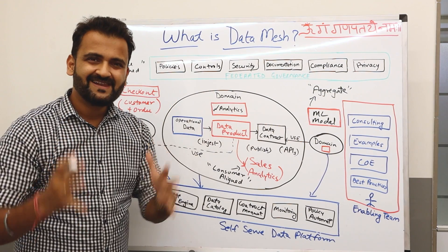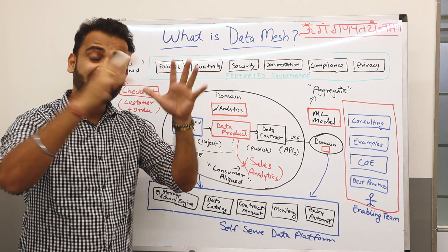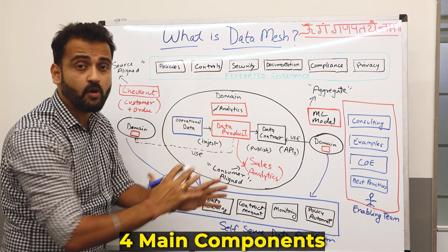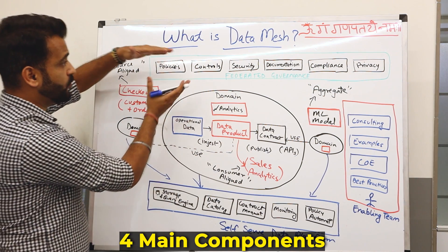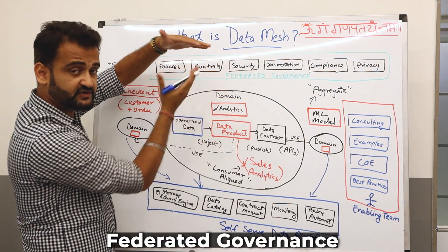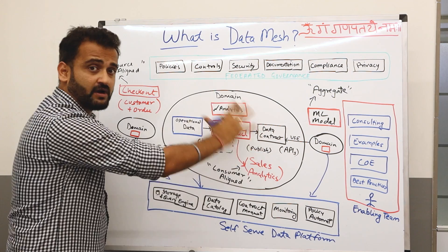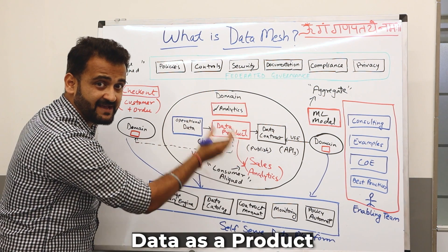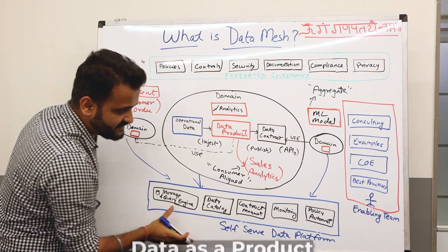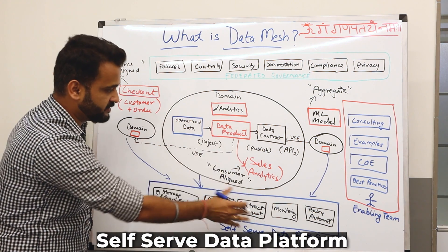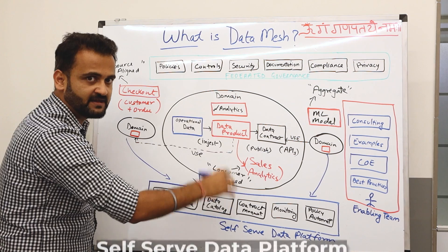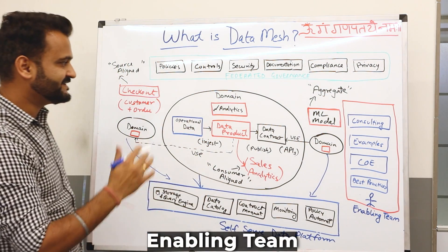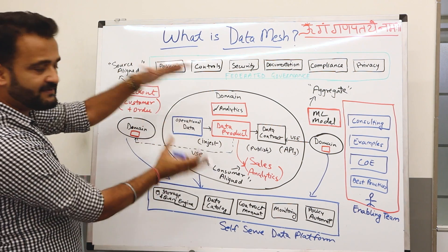Okay, so now let's understand in detail the Data Mesh architecture. As you can see, there are four main components which you could see in this architecture. One is federated governance, which was one of our four principles. You know, a domain-driven design, data as a product, centering everything around data as a product within a domain. Then there's a self-serve data platform for serving all the technical needs to this particular domain. And on the right there is an enabling team. Now let's understand who does what.